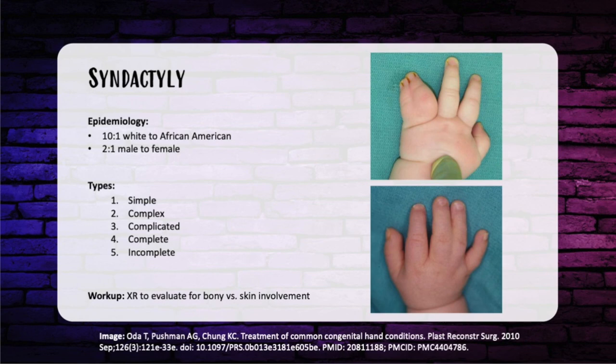There are different types of syndactyly. For simple, think S's — simple syndactyly skin, meaning only the skin is fused, no bony fusion. With complex, there's bony fusion present. Complicated is associated with a syndrome, for example Apert versus Poland syndrome. Then there's complete versus incomplete. In complete, the entire length of the finger including the fingertip and nail is involved. In incomplete, the fingertip and nail are spared.